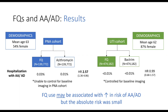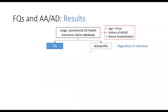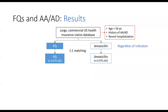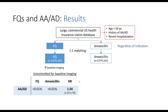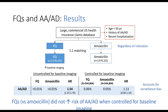In a secondary analysis, they went back to the insurance claims database and separated patients into those who received fluoroquinolones versus amoxicillin regardless of antibiotic indication—essentially replicating a prior observational study. After one-to-one matching, the fluoroquinolone group still had increased rates of baseline imaging compared to the amoxicillin group. When they didn't control for baseline imaging, fluoroquinolones were associated with a significantly higher risk of aneurysms and dissections. But when they controlled for baseline imaging—accounting for surveillance bias—that risk was attenuated to the point it was no longer significant. The authors concluded that fluoroquinolones, compared to amoxicillin, did not appear to increase risk when controlled for baseline imaging.